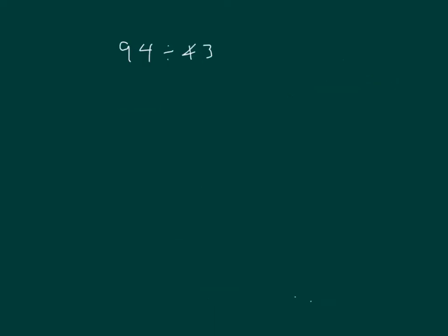Here we have 94 divided by 43. Let's work that out the same way. Let's use an estimate first. Divided by 40. Multiples of 40: 40, 80, 120. 80 is a good one to use. And 80 divided by 40 is 2.